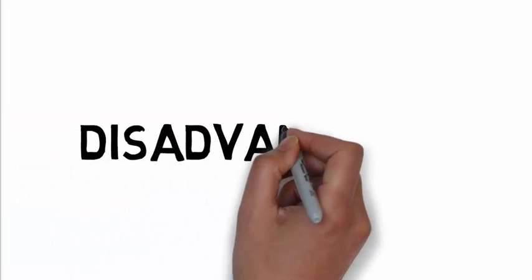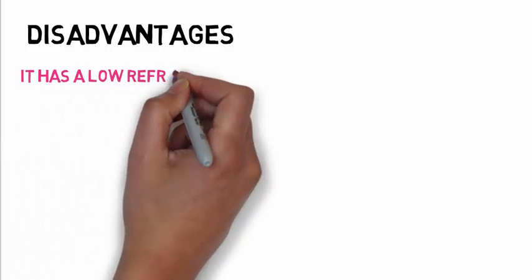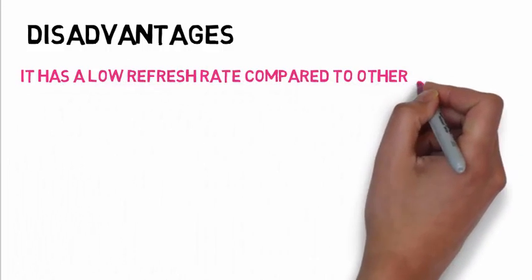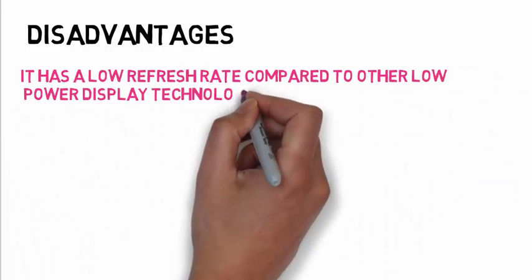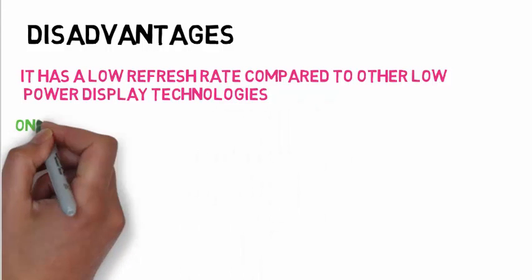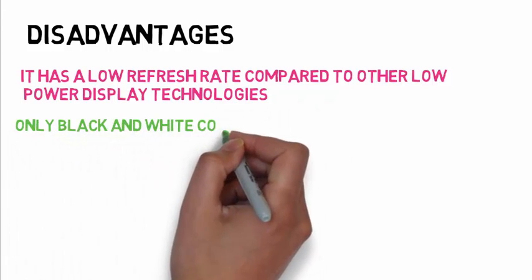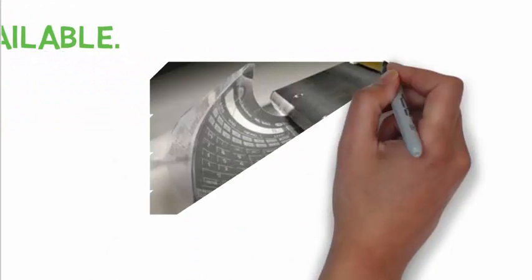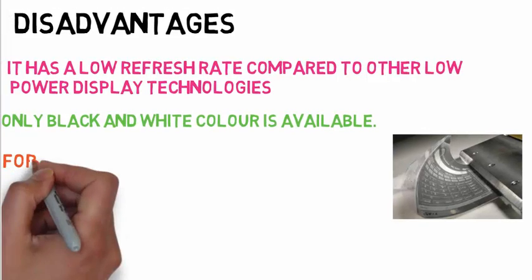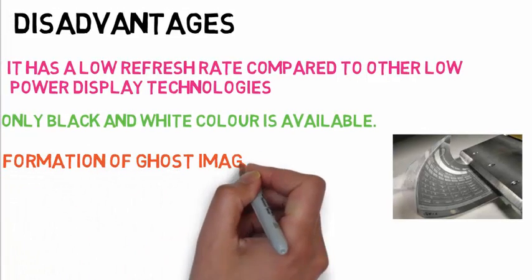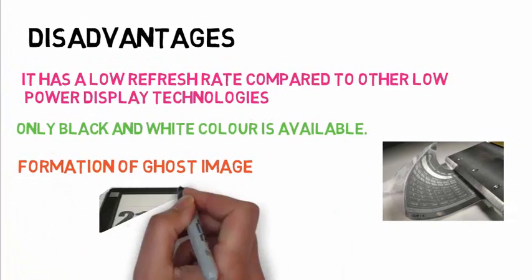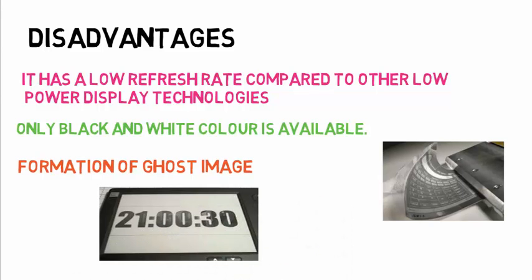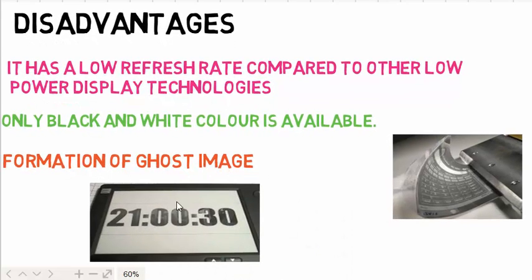And whenever we talk about the merits, we also have to come across the demerits. It has a low refresh rate. Whenever we change the page, it takes time to adjust the image. It is available only in black and white color. Color ink is available but it will cost you 9 times more than black and white ink. And a big disadvantage is its formation of ghost image. Shadow of the image is termed as ghosting of the image, just like this digital world which is shown in the video.